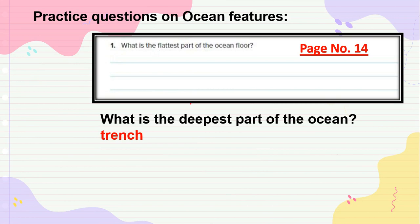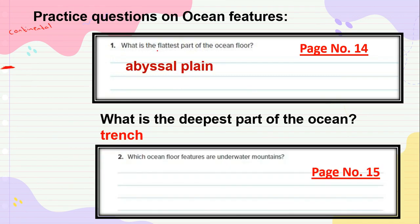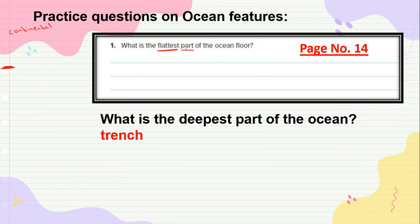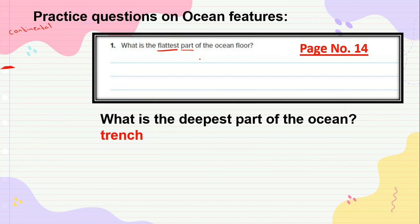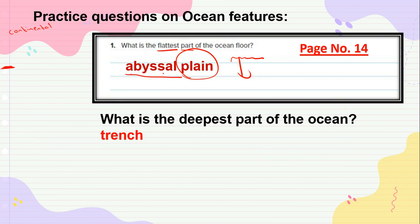Now let's talk about ocean features. Just like the flat piece of land above was called a plain, under the ocean we also call the flat part a plain. To show that it is under the sea, we add the word abyssal — an abyssal plain is a flat piece of land under the sea. A regular plain is above the sea.